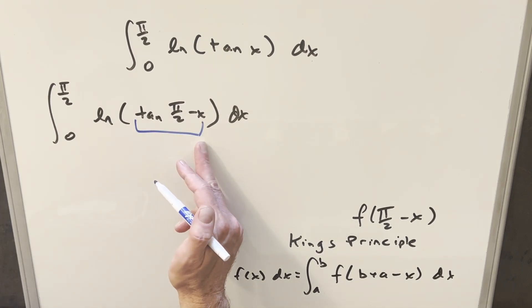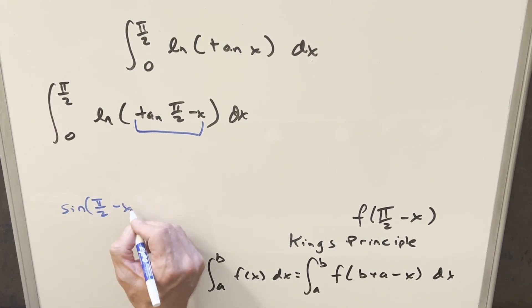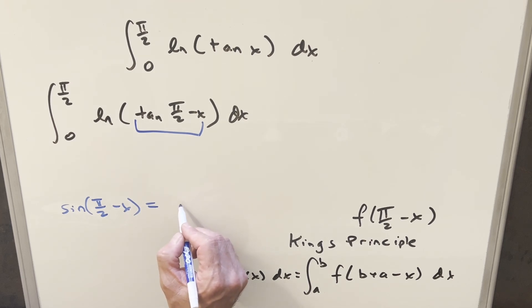But then for this right here, what you can do is use complementary angle formula. I usually like to remember it in terms of sines and cosines. So what we have for this is for sine pi over 2 minus x, that's going to be just cosine x. And for cosine pi over 2 minus x, that's going to be just sine of x.